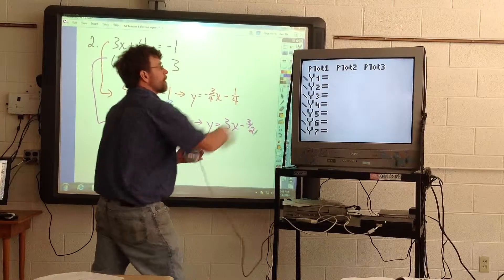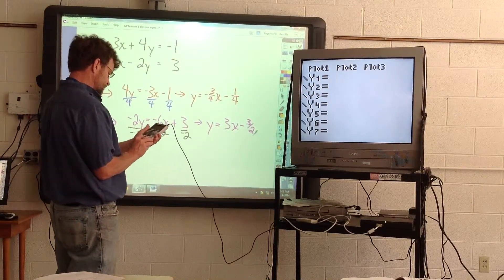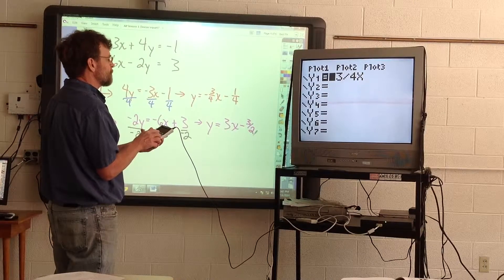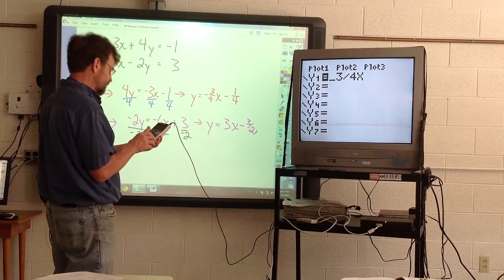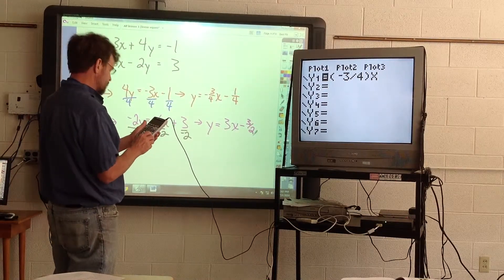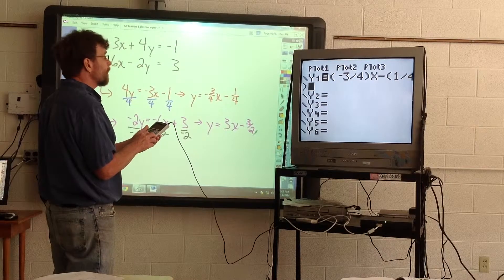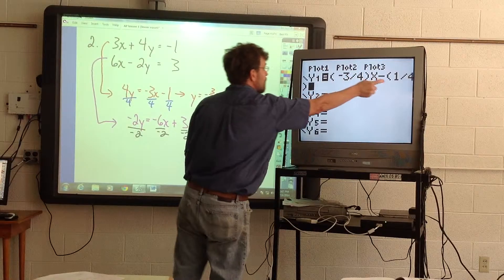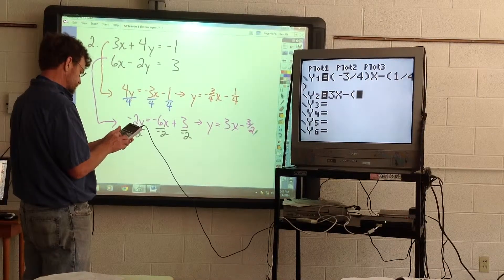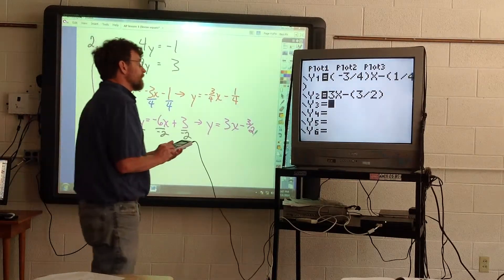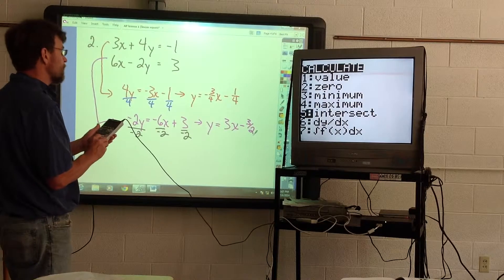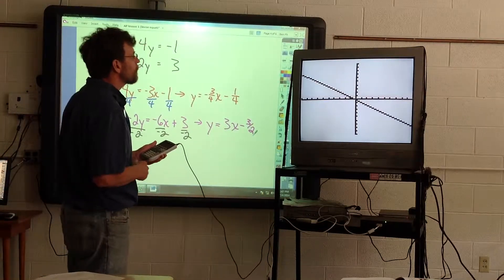So we're going to enter those two equations on our calculator. So negative 3 divided by 4, order of operations, it should be okay if you just enter it like this. It might be a good practice to put that in parentheses. It's not going to affect it any, but whenever you're dealing with fractions, you might want to get a good idea of doing that. So minus 1 divided by 4, or if you know the decimal equivalent, just use negative 0.75 and 0.25. Second one, 3X minus 3 divided by 2 or 1.5.